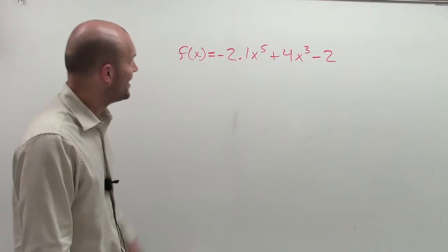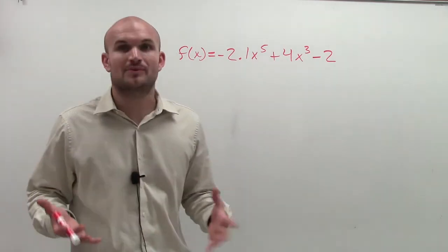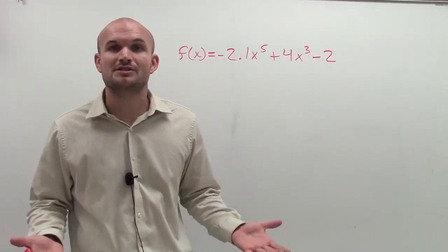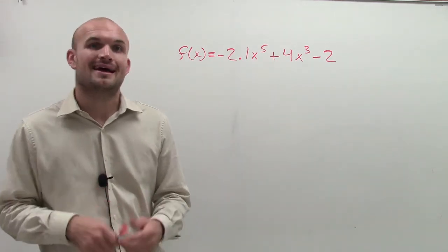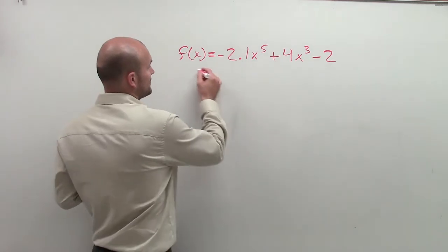So what we're going to do, first of all, to find end behavior, we need to determine by the leading coefficient test. And with the leading coefficient test, we're going to determine what the degree of the polynomial is and what the leading coefficient is.